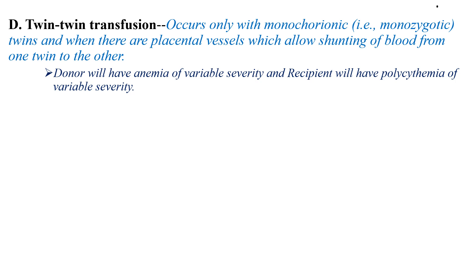Another cause of blood loss is twin-twin transfusion. This occurs only with monochorionic monozygotic twins when there are placental vessels that divert blood from one twin to the other, mainly from artery to vein. The donor twin will have anemia of variable severity and the recipient will have polycythemia of variable severity.